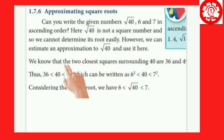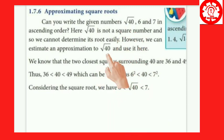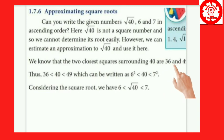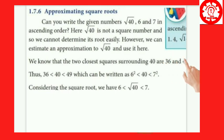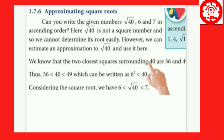We know that the two closest perfect squares surrounding 40 are 36 and 49. That is, 6 squared is 36 and 7 squared is 49. Therefore, the square root of 36 is 6 and the square root of 49 is 7. So the root value of root 40 lies between 6 and 7.